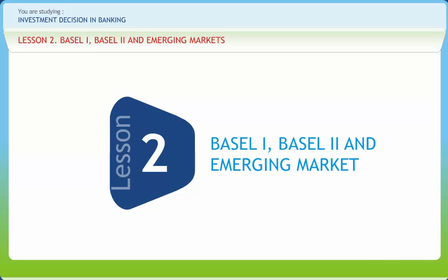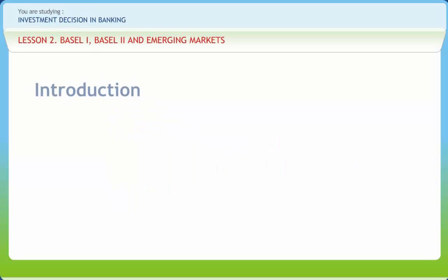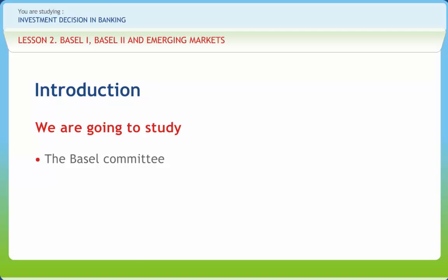Basel I, Basel II, and Emerging Markets. We all know that the Basel Accords are some of the most influential and misunderstood agreements in modern international finance. In this lesson, we will discuss the Basel Committee, explain Basel I, and describe Basel II.